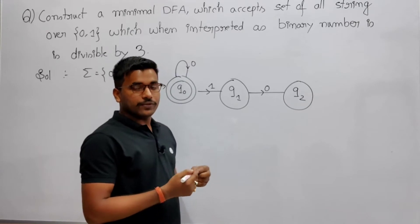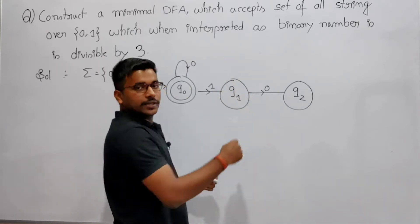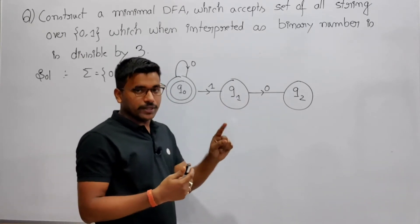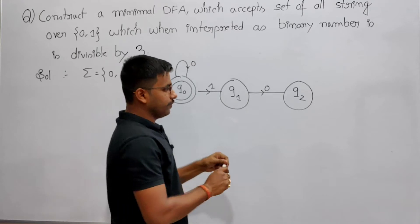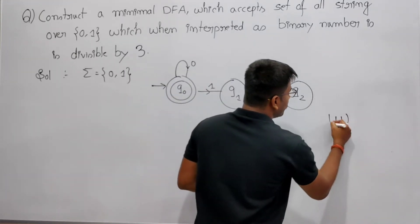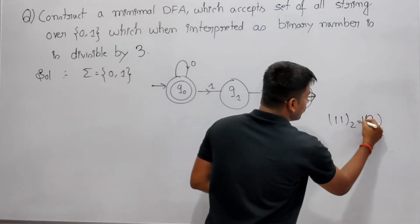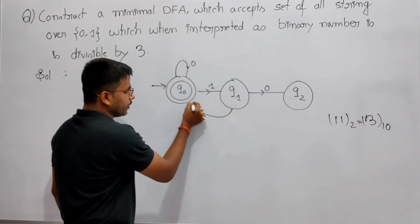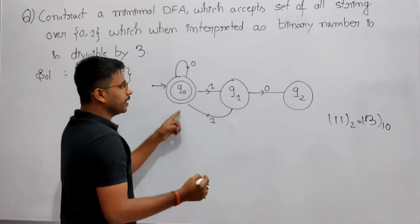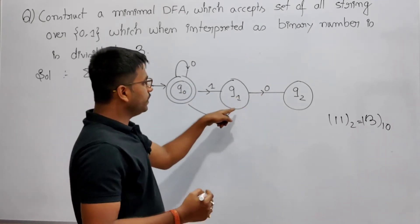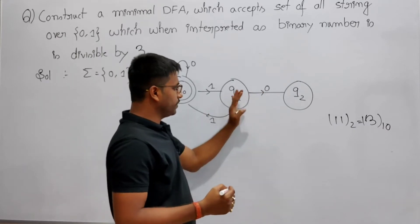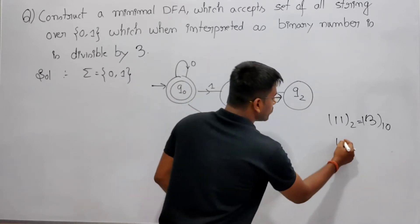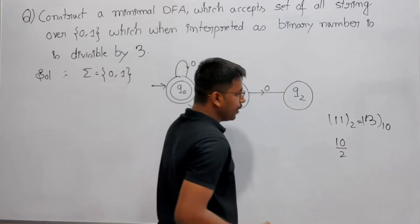Now if Q1 gets input 1, how did you reach Q1? By getting 1. Now again you get 1, so binary 11 is decimal 3. Divide by 3 gives remainder 0, so from Q1 on input 1 you go back to Q0. Q2 is reached by getting binary 10, which equals 2. Now from Q2 on input 0: 2×2+0 = 4, and 4 divided by 3 gives remainder 1, so go to Q1.